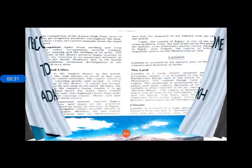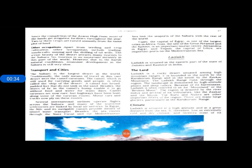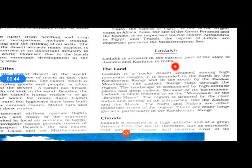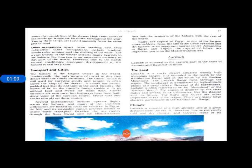Ladakh is situated in the eastern part of the Jammu and Kashmir union territory. As we know, Ladakh and Jammu Kashmir have now got the status of union territories. Ladakh is a cold and barren desert in the Himalayas, located in the eastern part of Jammu and Kashmir. It is enclosed by the Karakoram range of mountains in the north and Zaskar mountains in the south.